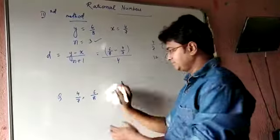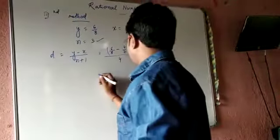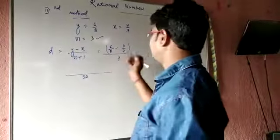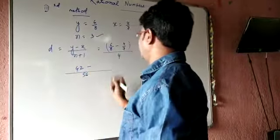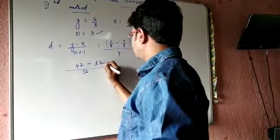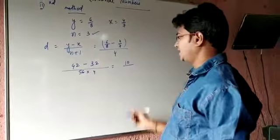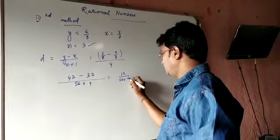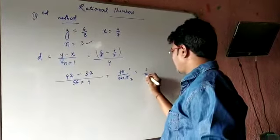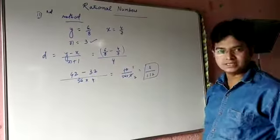So d equals six by eight minus four by seven, divided by four (since n plus one is four). The LCM of eight and seven is 56. Six by eight is 42 by 56, and four by seven is 32 by 56. Subtracting gives 10 by 56, divided by four, which is 10 by 224. Simplifying, we get 5 by 112. So d equals 5 by 112.